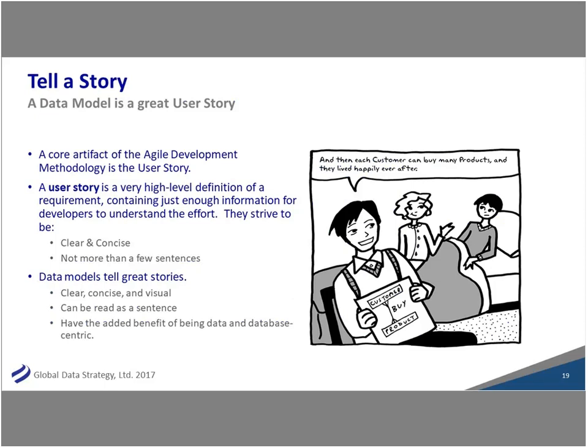Agile development loves the idea of a user story. What is a user story? It's a couple of sentences — a small chunk of what the user is trying to do. It's clear and concise. Data models are great for that — they're clear, concise, and have the added benefit of being visual. You can actually see the problem quickly and suss it out. You can read a data model as a sentence — you can diagram a sentence and turn it into a data model. And the extra benefit for agile stories is that a data model is very data-centric, even database-centric, so if you're trying to solve a data problem, what better way to write a story?